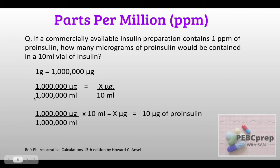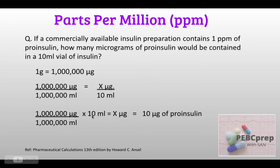When 1 million cancels out with 1 million, 10 is left. So: 1,000,000 micrograms divided by 1,000,000 milliliters, multiplied by 10 milliliters, equals 10 micrograms of pro-insulin.